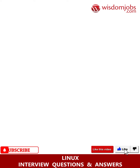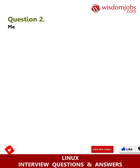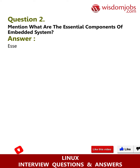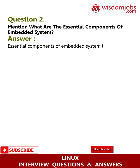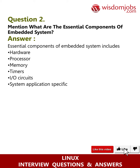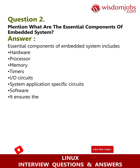Question 2: Mention what are the essential components of an embedded system. Answer: Essential components of an embedded system include hardware, processor, memory, timers, I/O circuits, system application-specific circuits, and software. It ensures the availability of system memory.